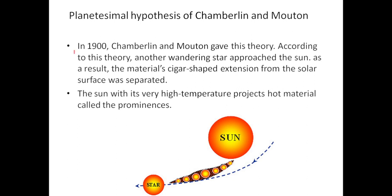The planetesimal hypothesis was given in 1900 by Chamberlin and Moulton. According to this theory, another wandering star approached the sun. As a result, the material's cigar-shaped extension from the solar surface was separated.